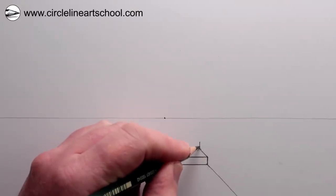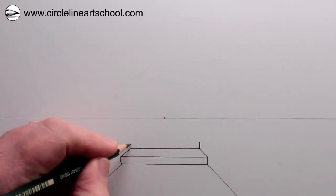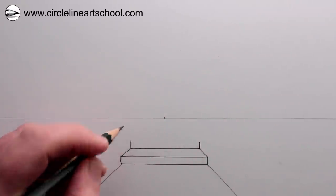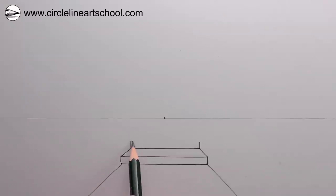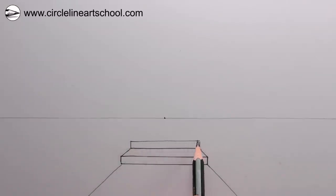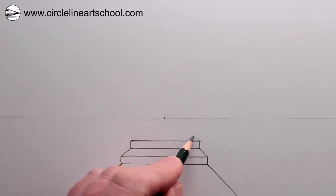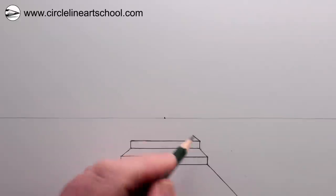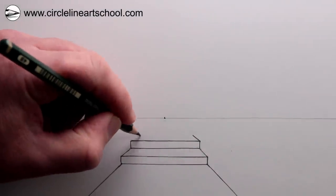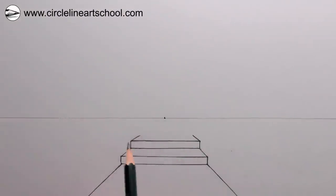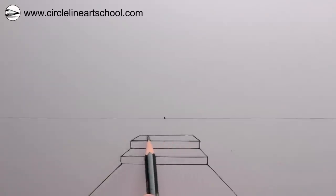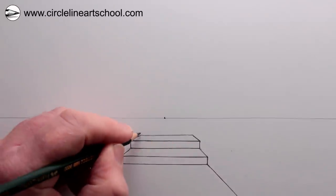We can repeat the process now by drawing two vertical lines for the riser of the step and then joining them with a horizontal line, and then using our vanishing point, which is in the center of the drawing, to find the two receding lines and then connect them with a horizontal line. So now we've got our second step.